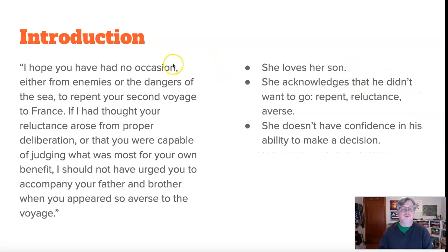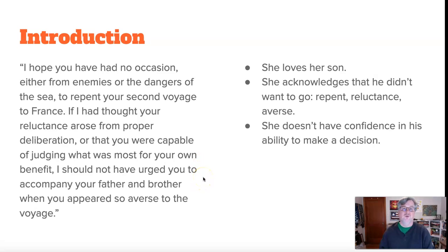Well, she loves her son — she states that clearly in the first sentence. She acknowledges that he didn't want to go, and the language she uses — 'repent,' 'reluctance,' 'averse' — indicates his attitude toward the journey. She acknowledges that. She also tells us clearly she doesn't have confidence in his ability to make a decision: if she thought he was capable of judging what was most for his own benefit, she wouldn't have urged him to accompany his father. So she gets to the heart of her thesis by telling her son that she knows best, and the advice she's about to give him is the advice he should follow.